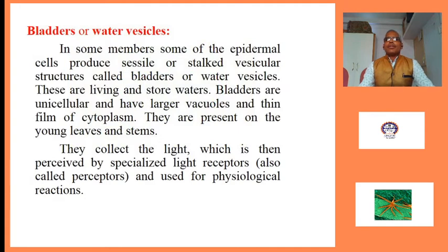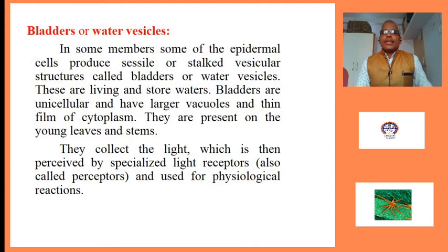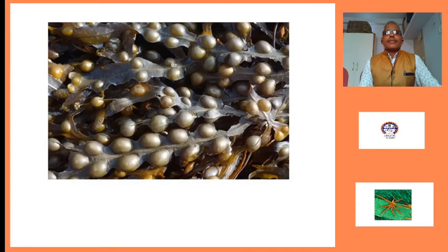Bladders and water vesicles: In some members, some of the epidermal cells produce sessile or stalked vesicular structures called bladders or water vesicles. These are living and store water. Bladders are unicellular and have large vacuoles and a thin film of cytoplasm. They are present on young leaves and stem cells; they collect light which is then received by specialised light receptors, also called receptors, and used for physiological reactions. These are the bladders or vesicles.